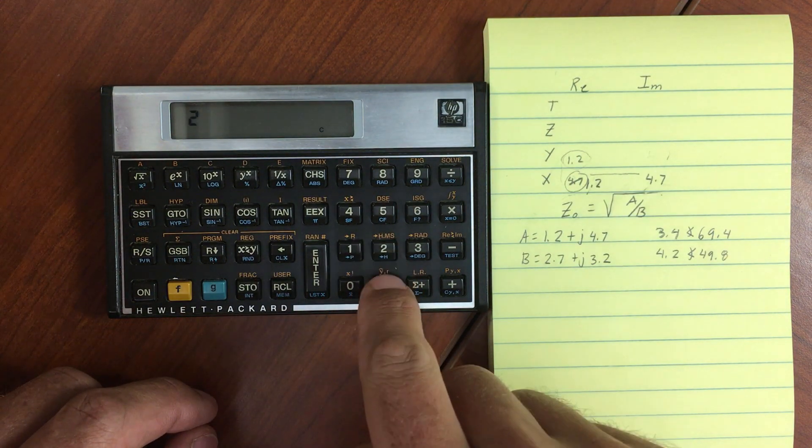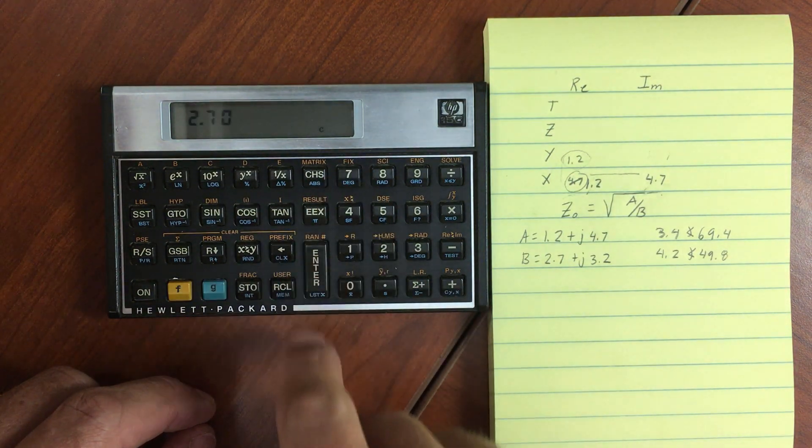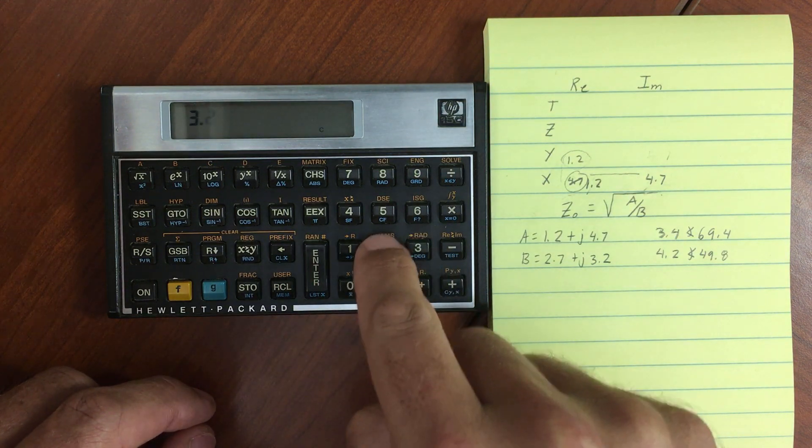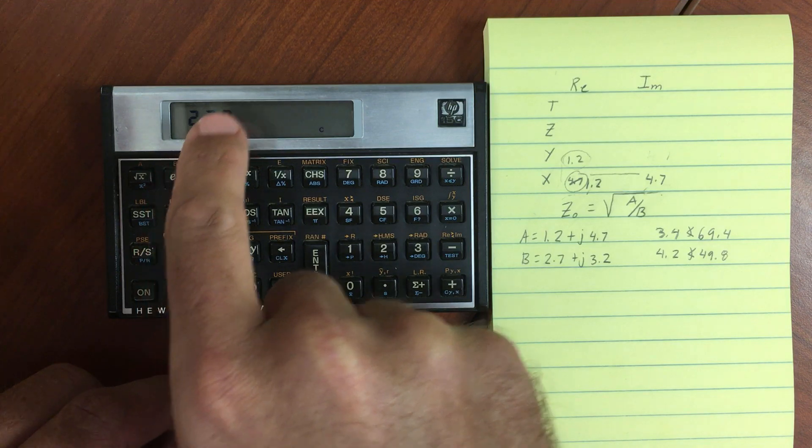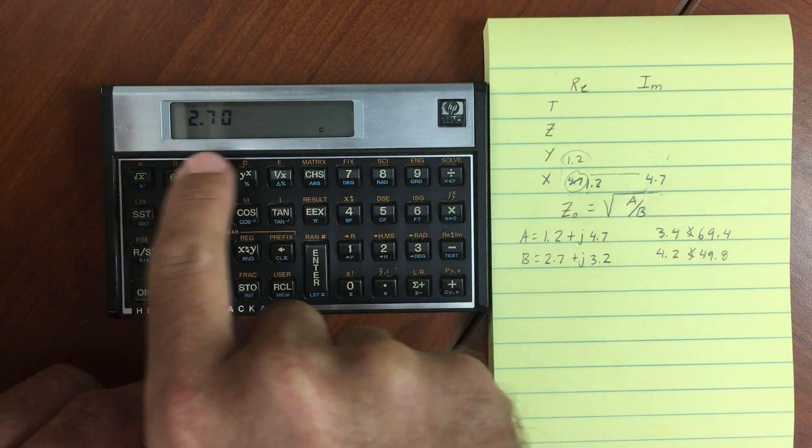Then do 2.7. Enter. 3.2. Change that to a complex number. And again, you'll notice that the stack has dropped. So we have in our real stack, we should have 2.7.